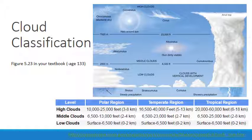Cumulus clouds, or cumuliform clouds, consist of globular cloud masses that are often described as cotton-like in appearance. Normal cumulus clouds exhibit a flat base and appear as though they are rising domes or towers. Cumulus in Latin means a heap or a pile. Cumulus clouds form within a layer of the atmosphere where there is some convection and rising air currents.